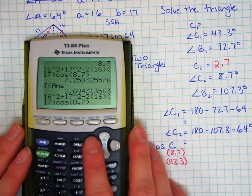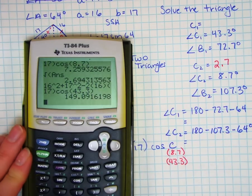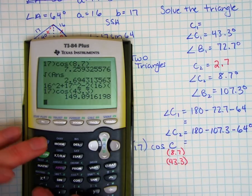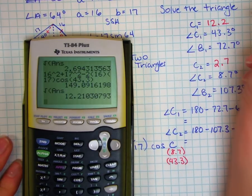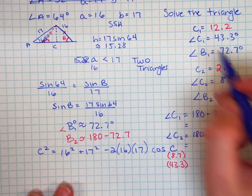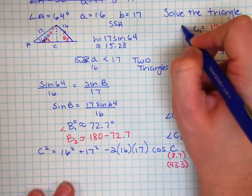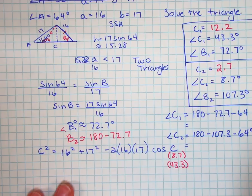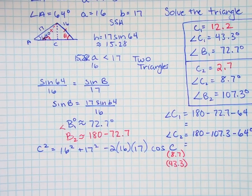I can get that second entry again, and this time taking the cosine of 43.3 degrees, and C1, again, the square root, will be approximately 12.2. So in this problem, I have two full answers, triangle 2 and triangle 1, one an obtuse triangle and one an acute triangle.